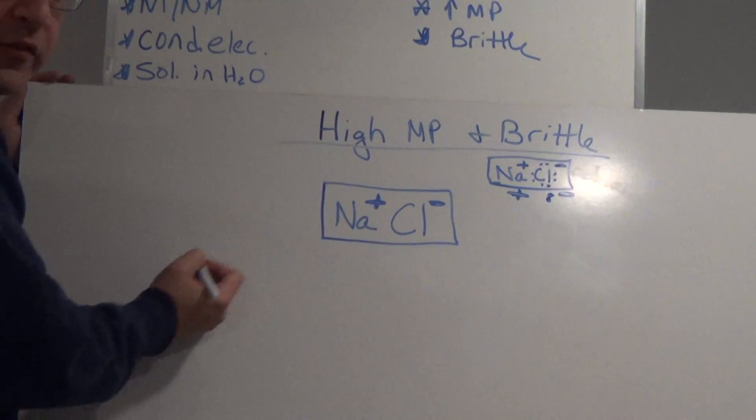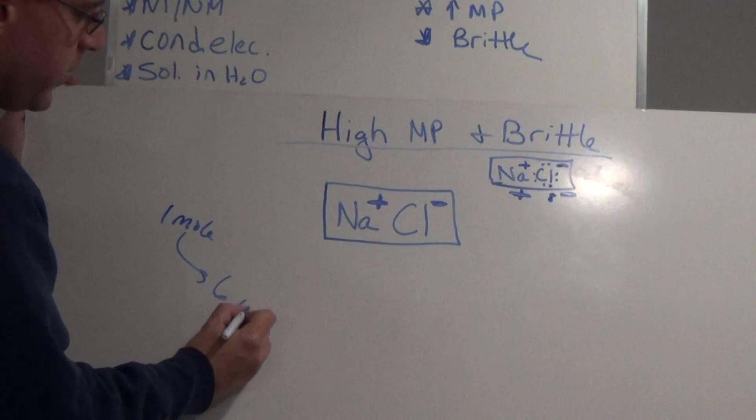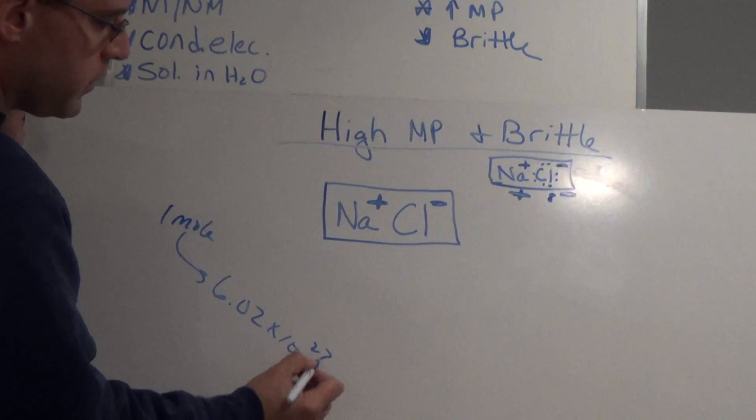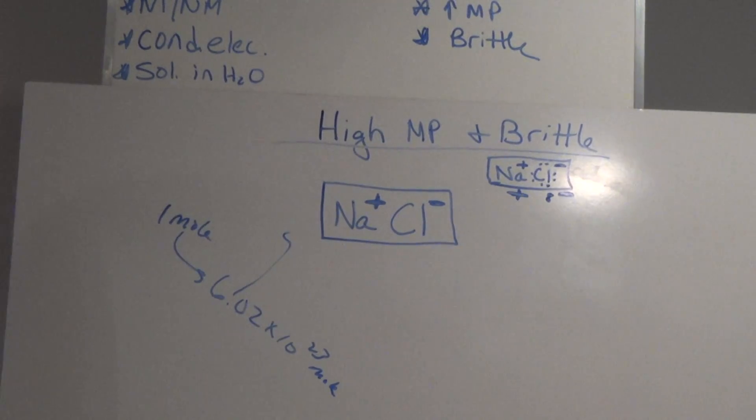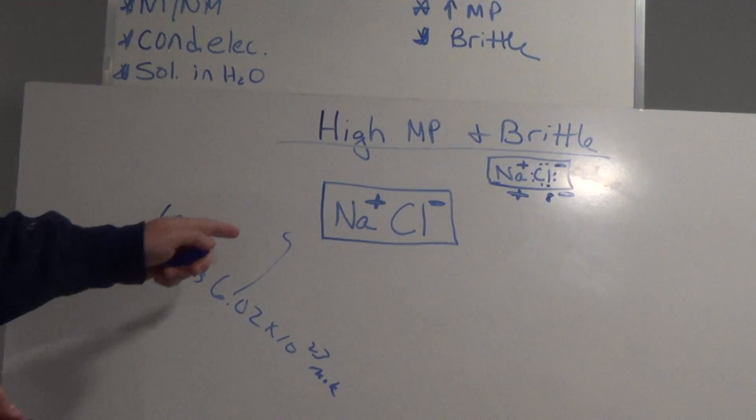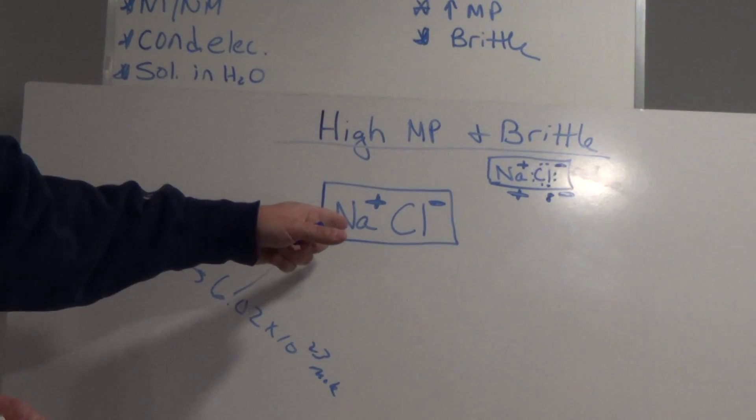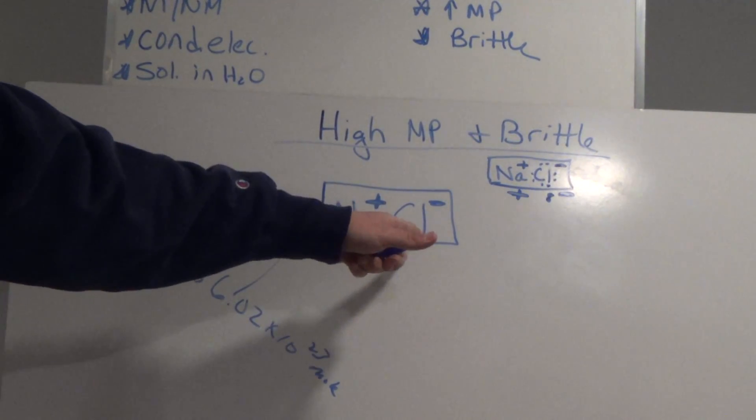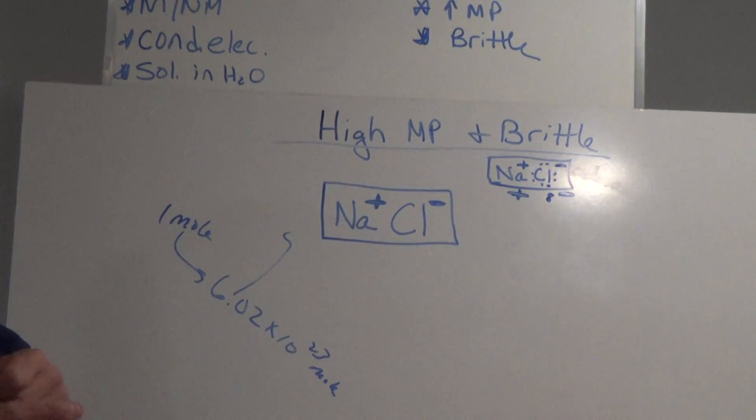Remember we said one mole of these is equivalent to 6.02 times 10 to the 23rd molecules, and we know how big 10 to the 23rd of those are. I think sodium has a mass of 22, and chlorine has a mass of 35, 36. So if I had 86 grams of this, that would be one mole.